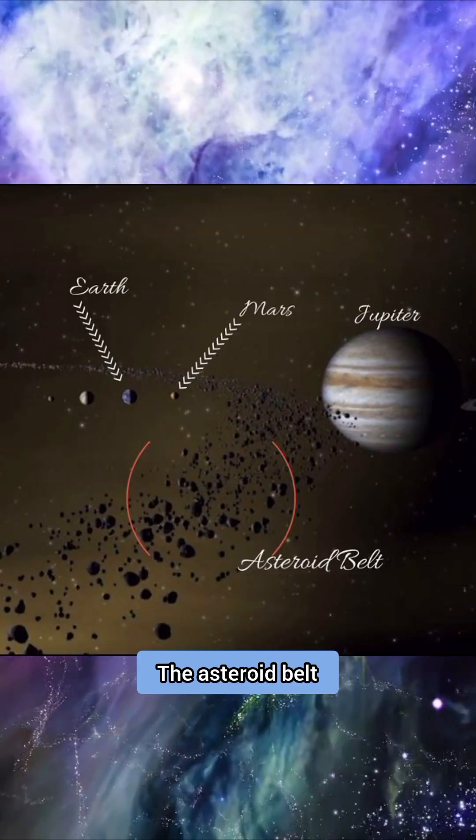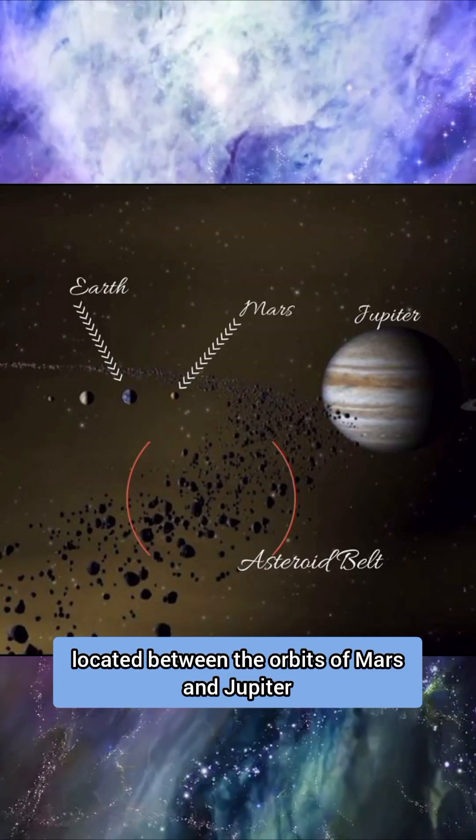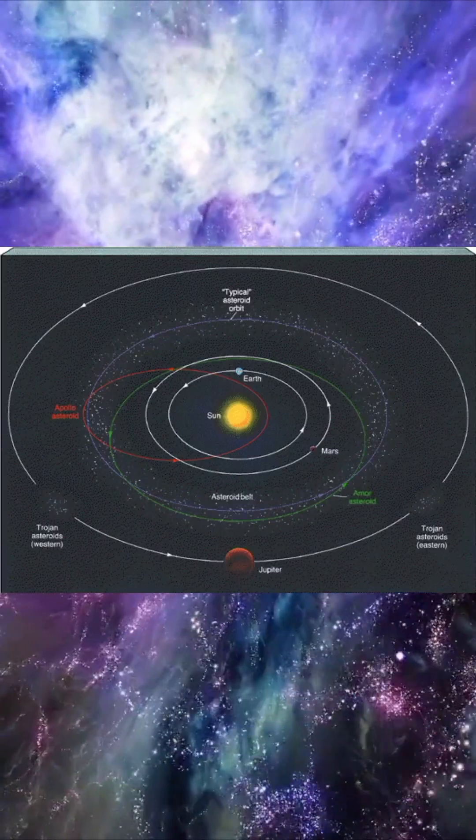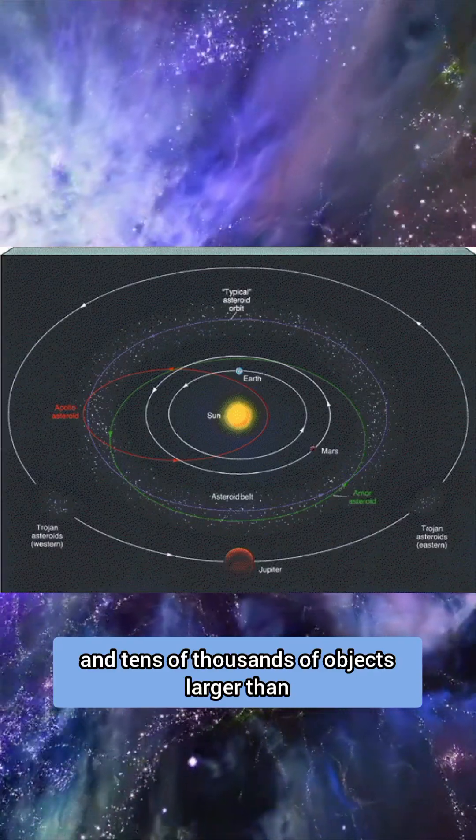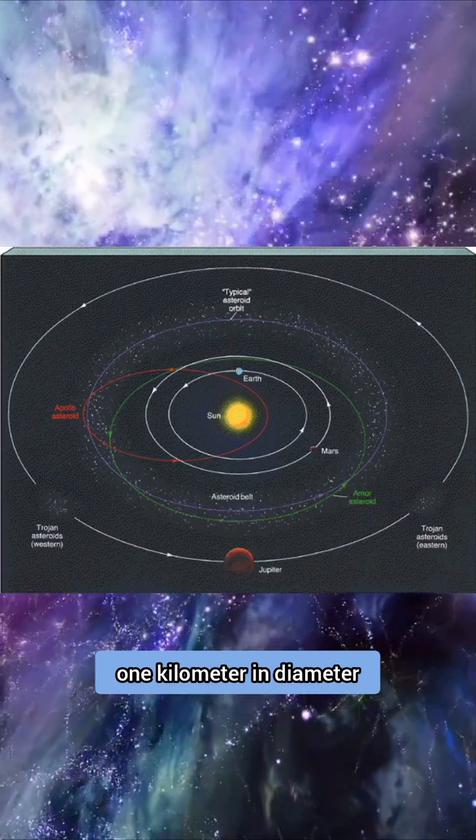The next fact! The asteroid belt, located between the orbits of Mars and Jupiter, contains numerous irregularly shaped bodies and tens of thousands of objects larger than one kilometer in diameter.